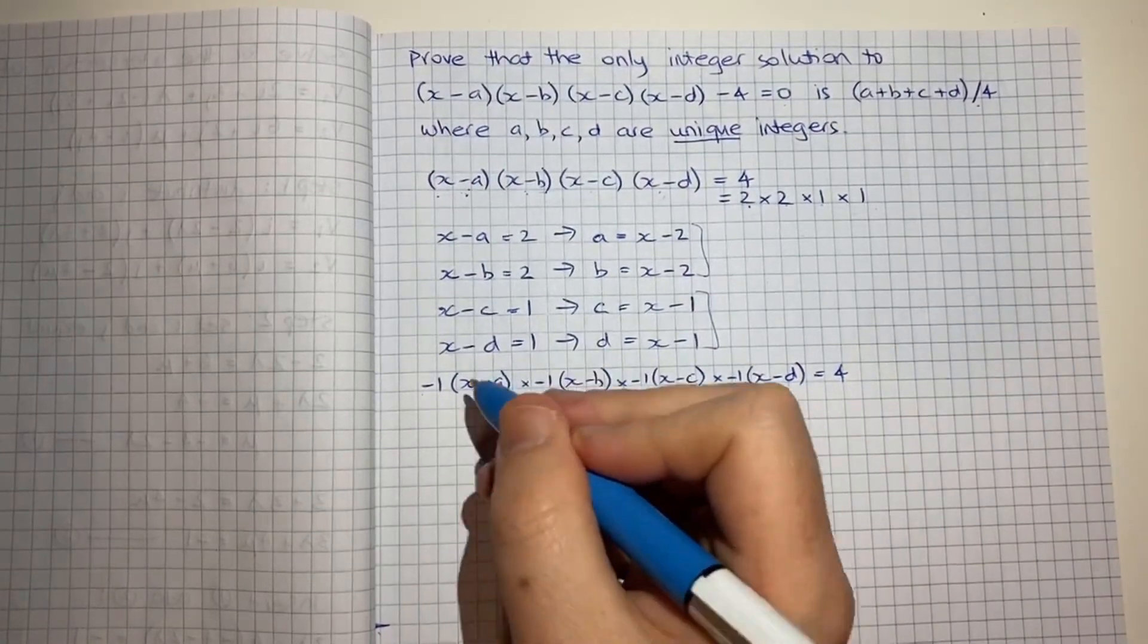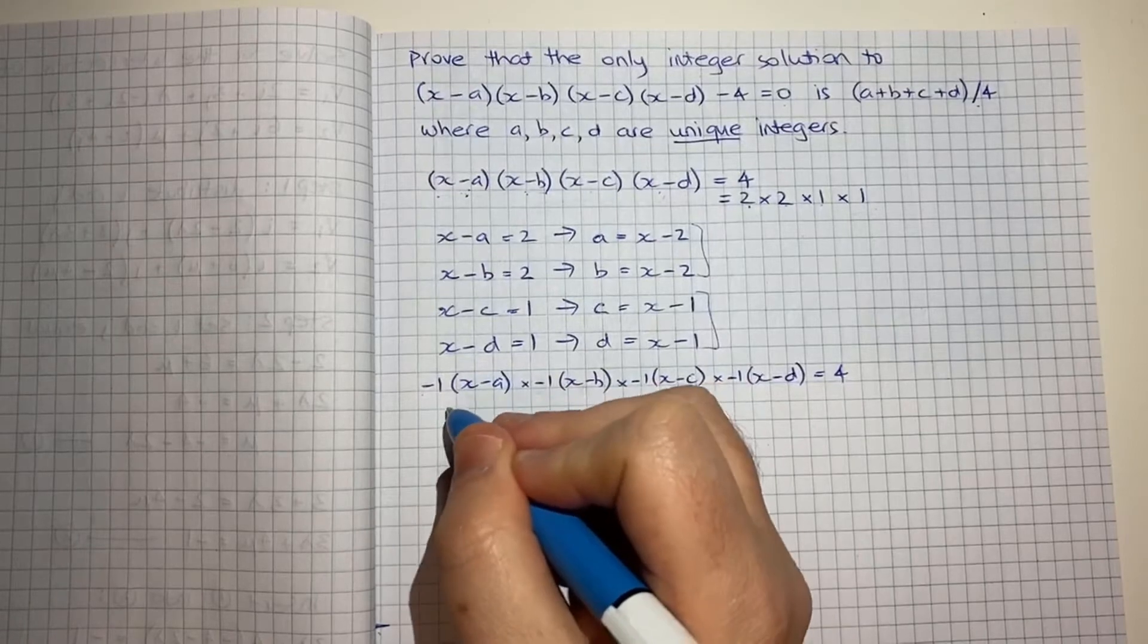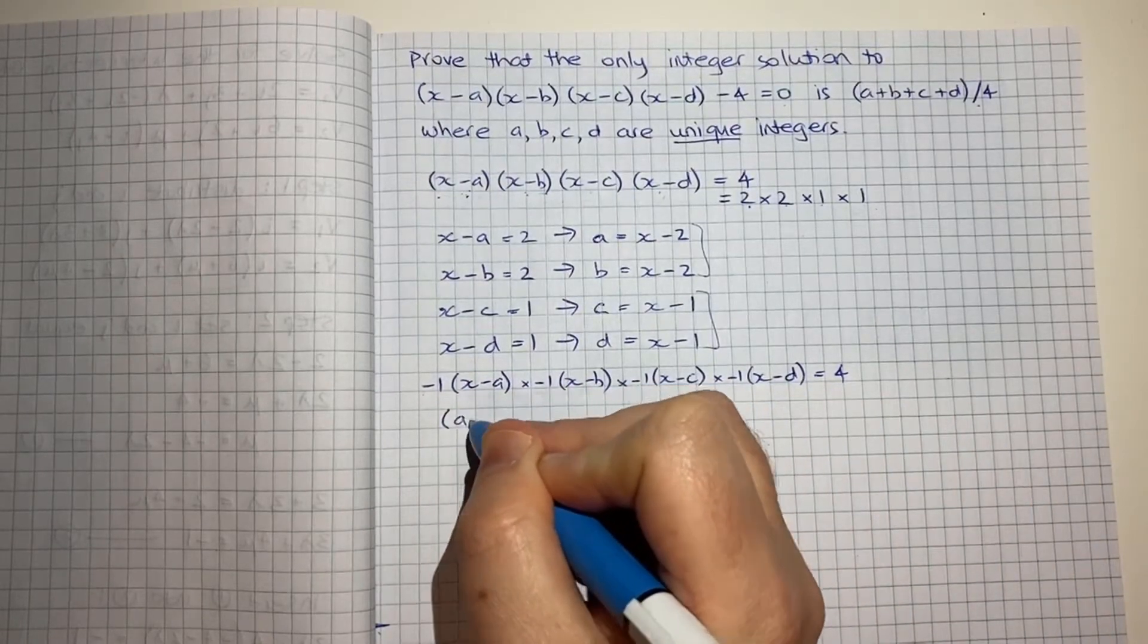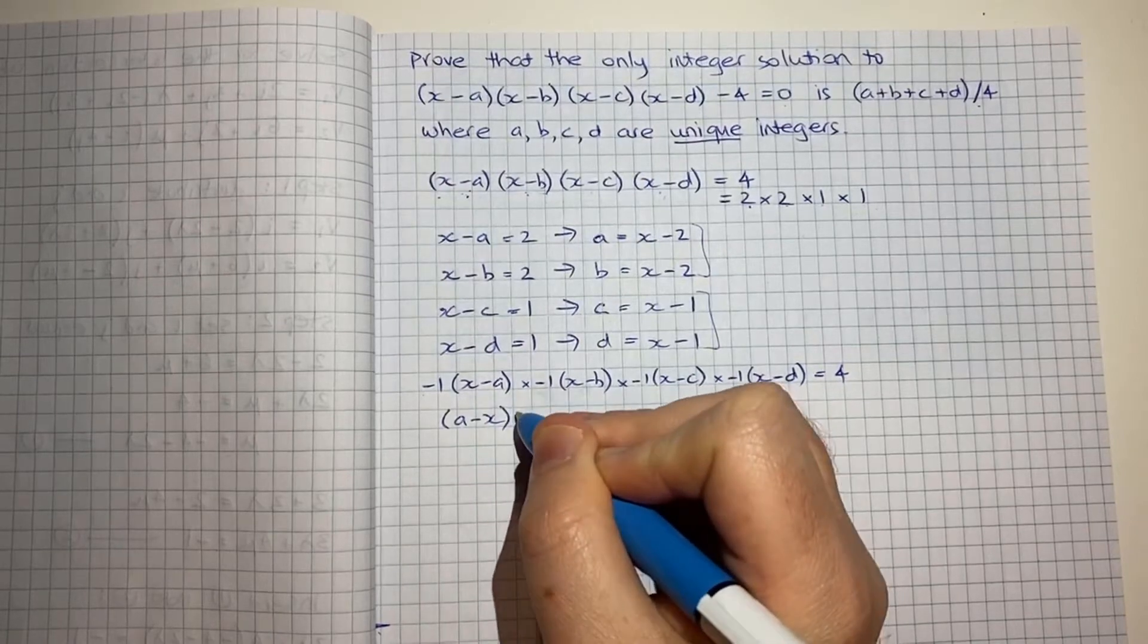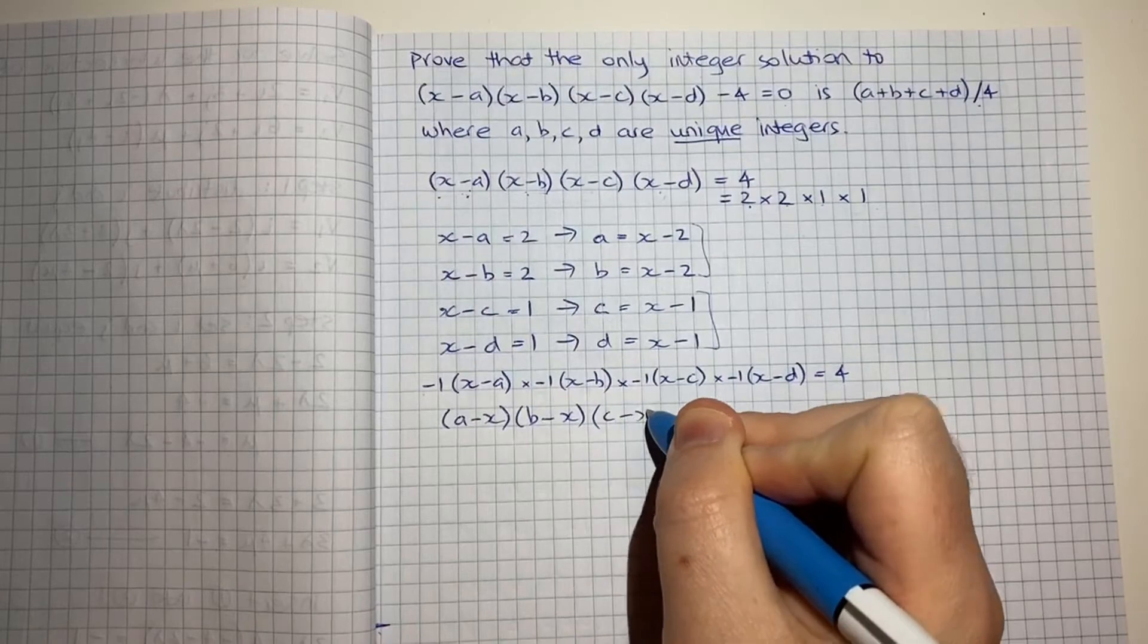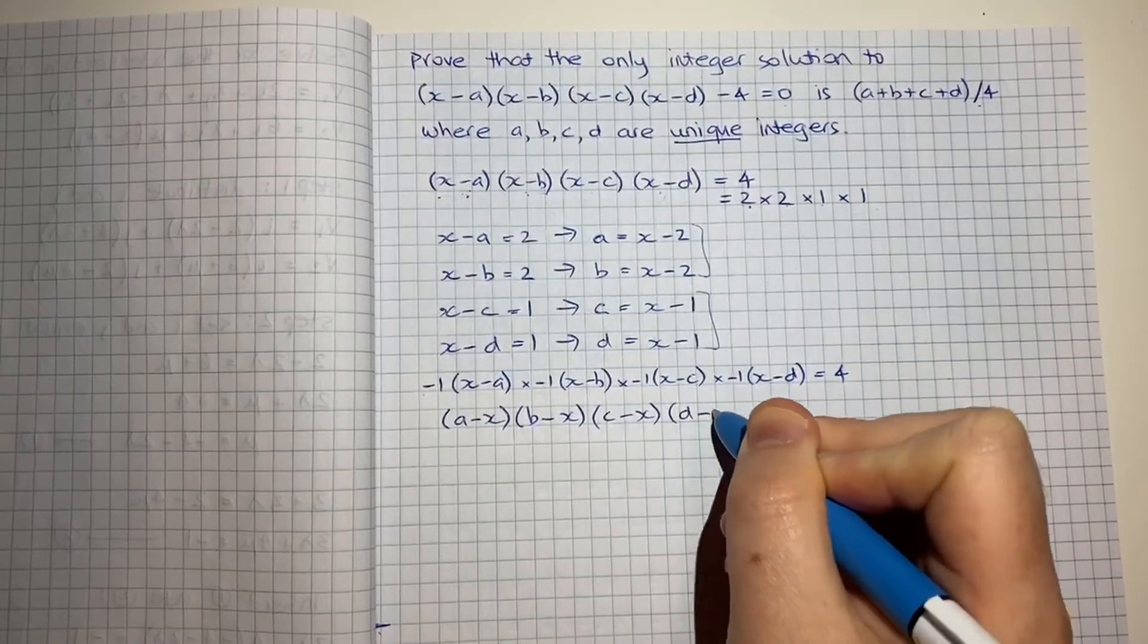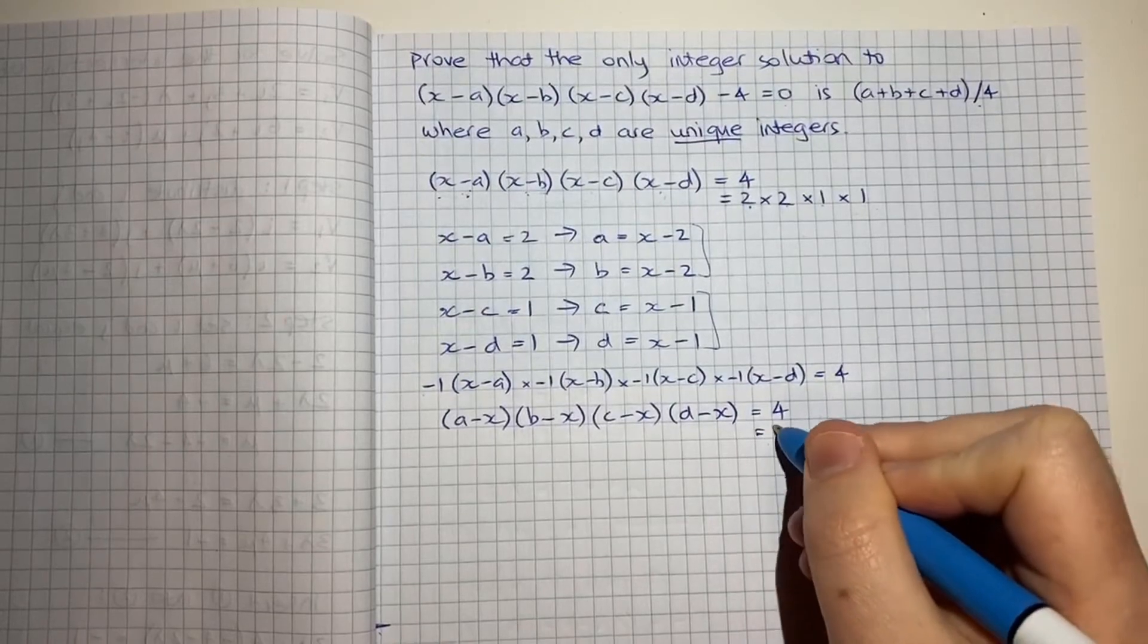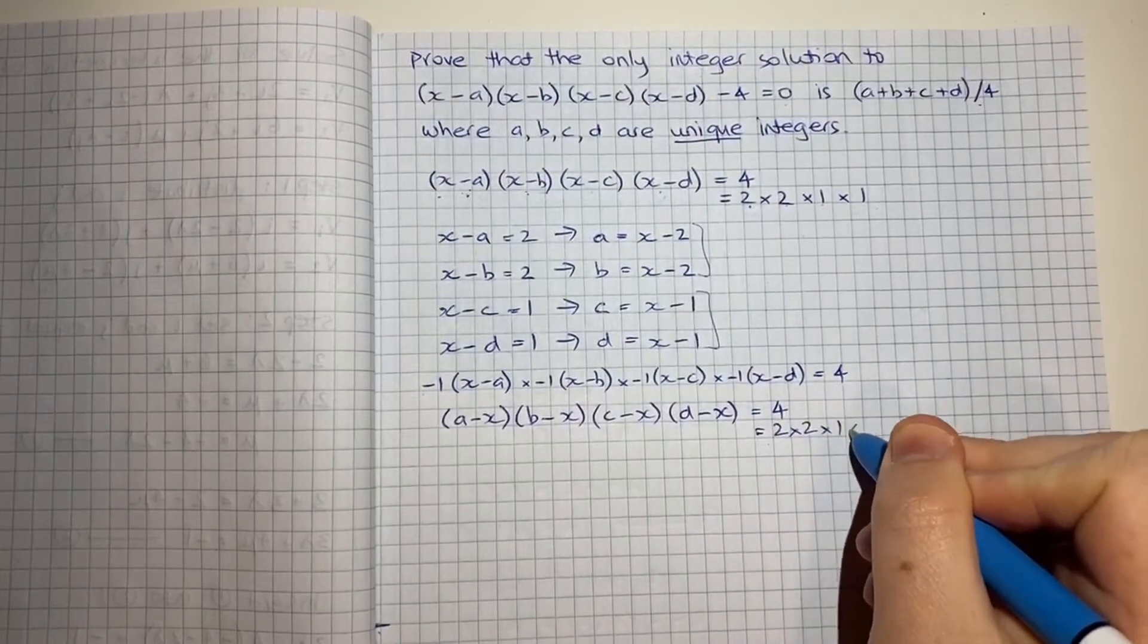But what it lets me do now is to rewrite this left hand side to be (a-x)(b-x)(c-x)(d-x) = 4. And again we'll write that out as 2 times 2 times 1 times 1.